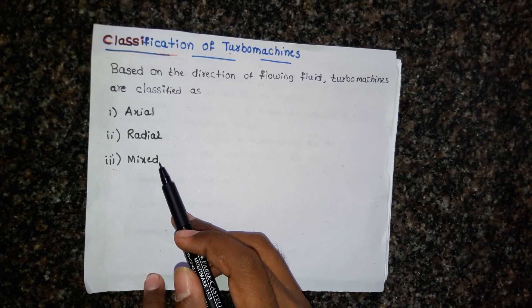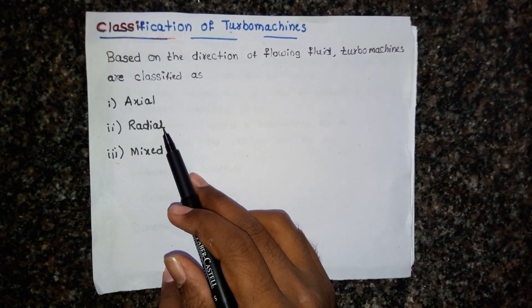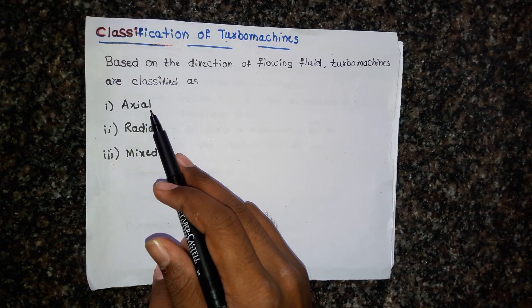In mixed type turbomachines, the fluid entering may be axial and exit may be radial, or the fluid entering may be radial and exit may be axial.